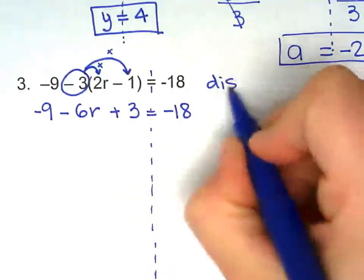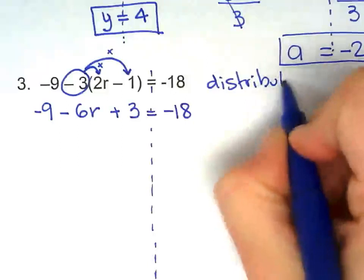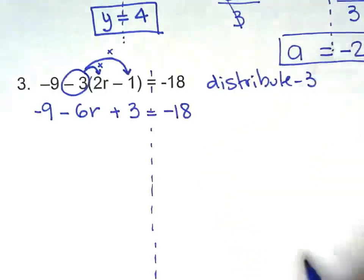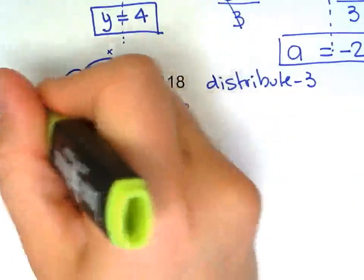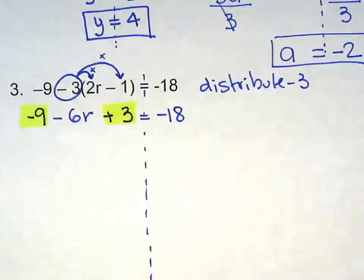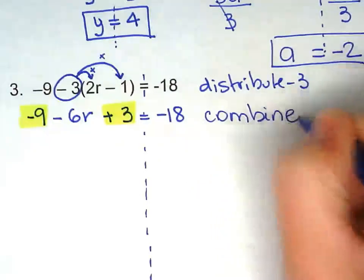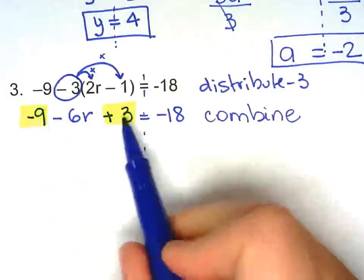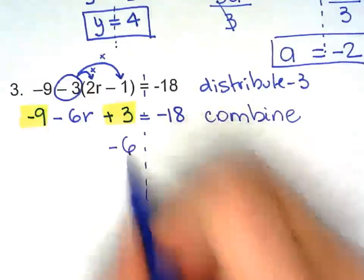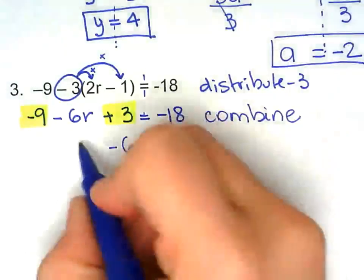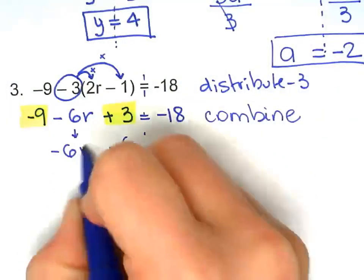So first step, we distribute negative 3. Now, we're going to combine like terms right here. So combine. Negative 9 plus 3 is negative 6. Everything else, just bring them down.